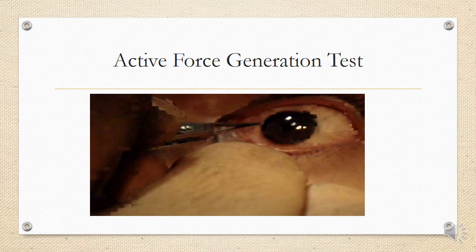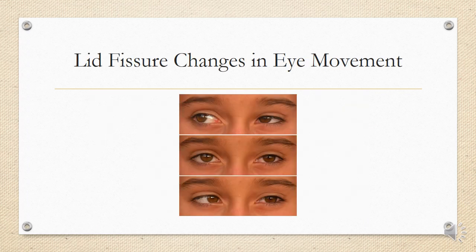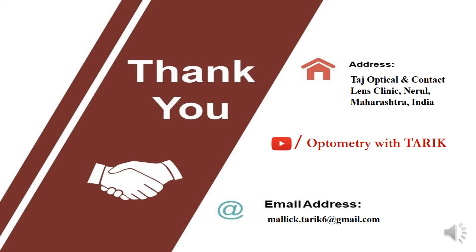There are also changes in lid fissure or palpable fissure height. If a restriction is present, there will be a change in the palpable fissure height. This is demonstrated in a case of Duane's retraction syndrome: in primary position both palpable fissures are almost the same, but when the patient looks in one particular direction, the palpable fissure height decreases, indicating a restrictive squint. In paralysis, there is no change in palpable fissure height, but in restriction there is always a change.